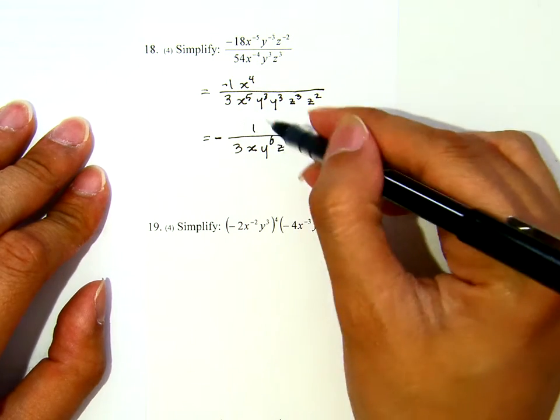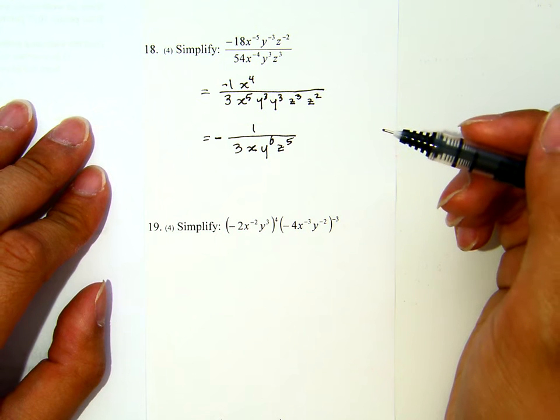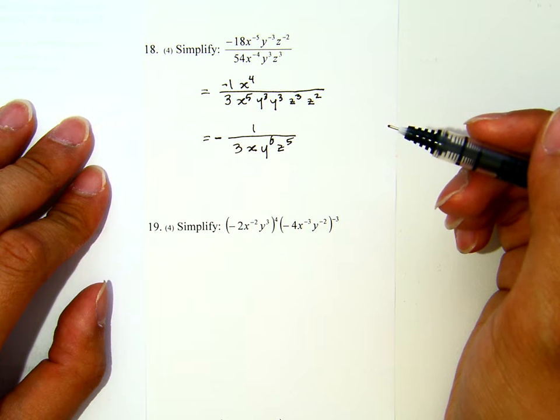Now, notice that if you didn't write anything on the top earlier, now you have to write something. And you need to write 1, right? Now, this is for number 18.